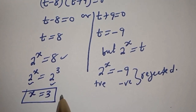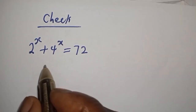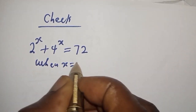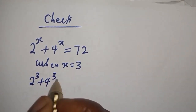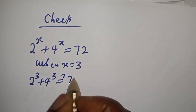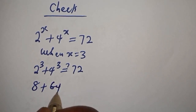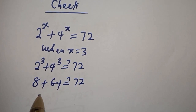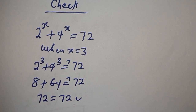We can check to confirm if our answer is right. We have 2 raised to power S plus 4 raised to power S equals 72. When S equals 3, this is 2 raised to power 3 plus 4 raised to power 3, which must equal 72. Then 2 cubed is 8, and 4 cubed is 64. So 8 plus 64 equals 72, which satisfies the equation at S equal to 3.